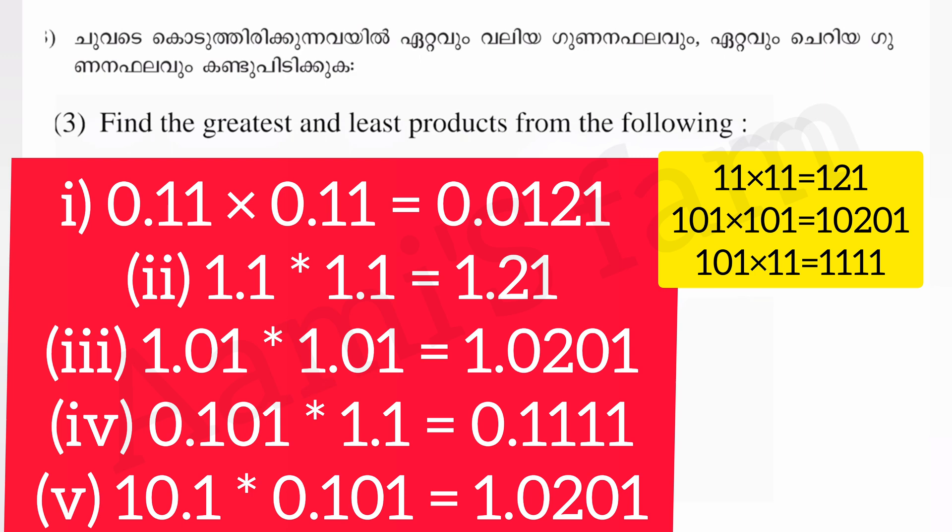Number 4, question 5: we have 0.8. How many decimal places does it have? This number is 0.0121. That is correct. Clear.